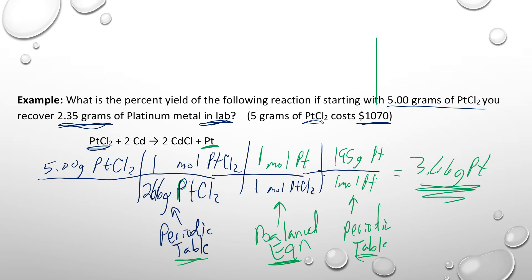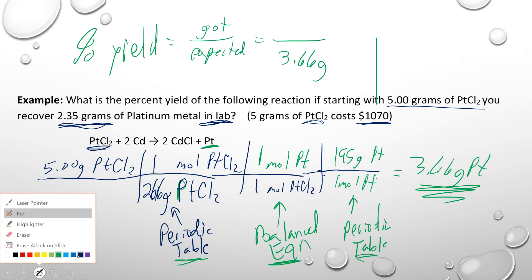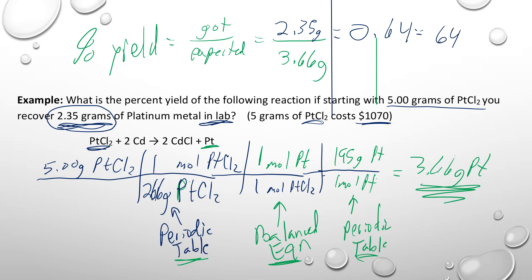Multiplying 5 times 195 and dividing by 266 gives 3.66 grams of platinum expected. The question tells us 2.35 grams is what we recovered in the lab. So percent yield is 2.35 divided by 3.66, which gives 0.64 or 64%. That means 64% of what you started with — and 64% of that $1,000 — is what you recovered. That's not a great yield.